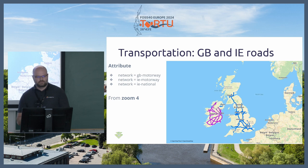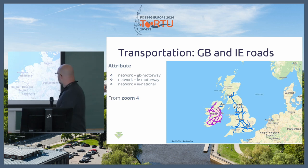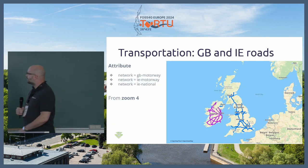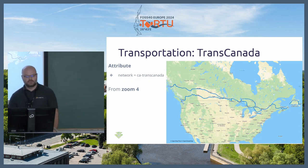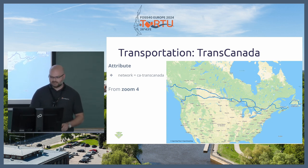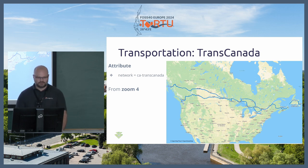Among the changes, for Great Britain and Ireland there is a new network attribute so you can style roads differently. Roads are now moved to the appropriate zoom levels, so you'll see them highlighted. For example, the Trans-Canada Road, which is at the same hierarchy level as US interstate highways, can now be styled using the new network attribute — CA Trans-Canada — to distinguish it appropriately.